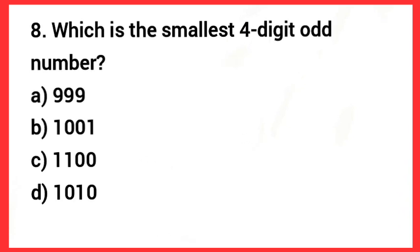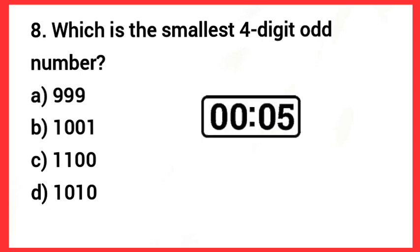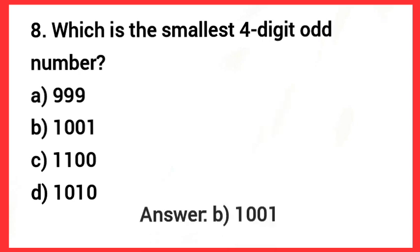Next one: Which is the smallest four digit odd number? Answer: Option B — 1,001.